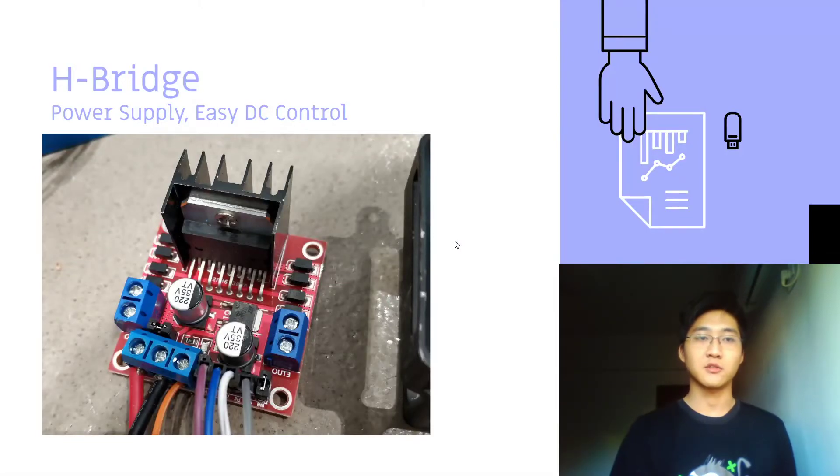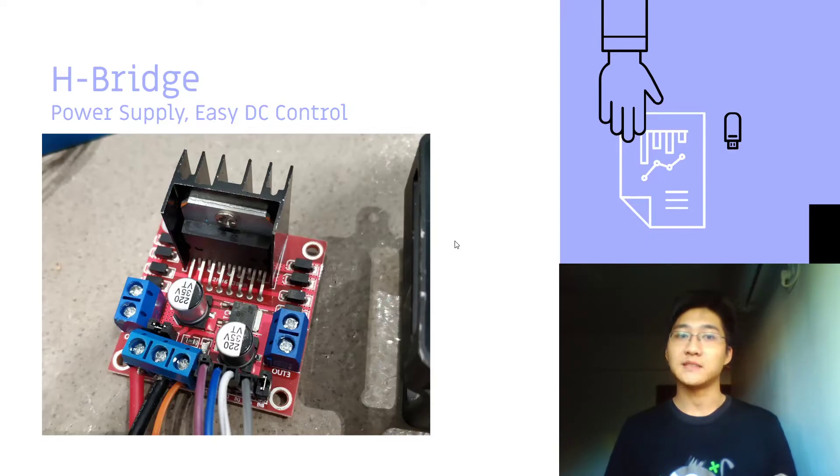And then is the control part, H-bridge. H-bridge can provide 24 watt power supply to the push rod. And also it has easy DC control with PWM signal, which is very convenient for our programmer.